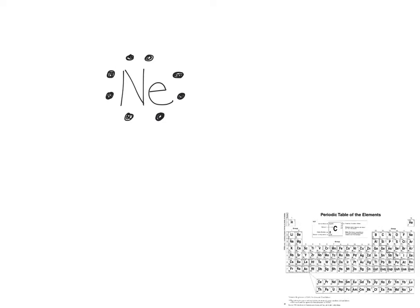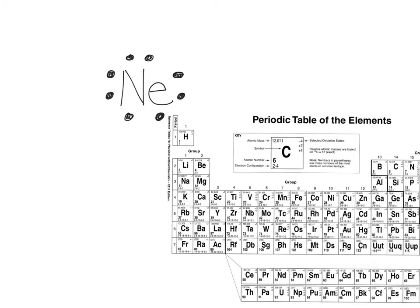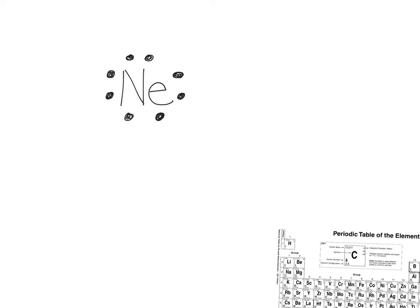Let's now do one for a different element, maybe one that's not totally full. We're going to do it for calcium. Calcium's valence number is 2. So we put its symbol as Ca, and then the two electrons will go on the same side, and we're done.